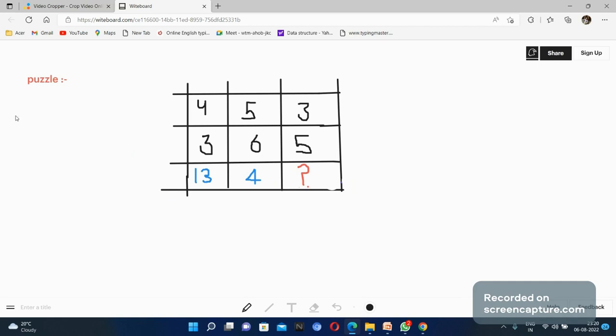Welcome back to our YouTube channel. Today I will discuss a very important puzzle that is asked in Infosys exams. It is a very repetitive question. Here is the puzzle: 4, 3, 13 in the first row; 5, 6, 4 in the second row; 3, 5, and what will come in the question mark?